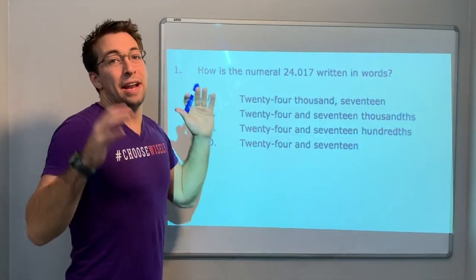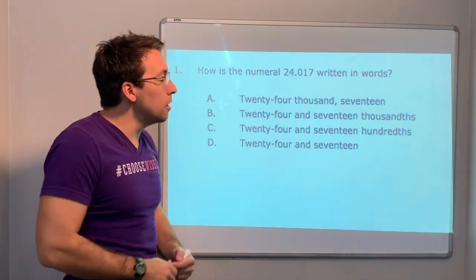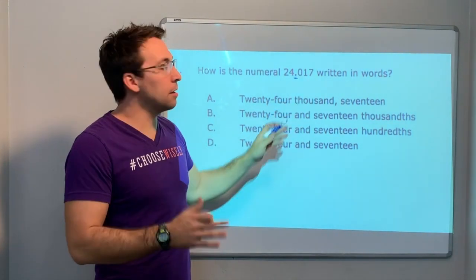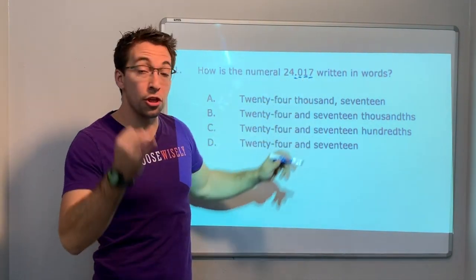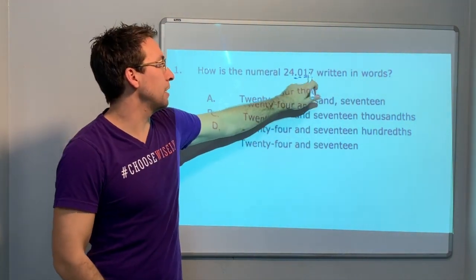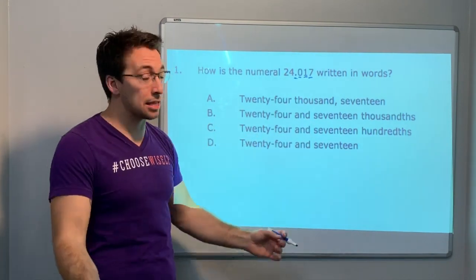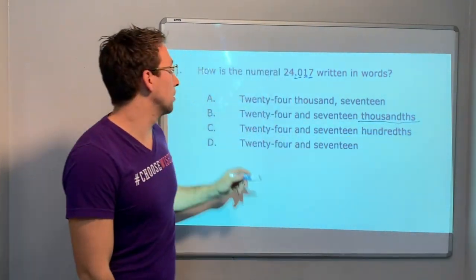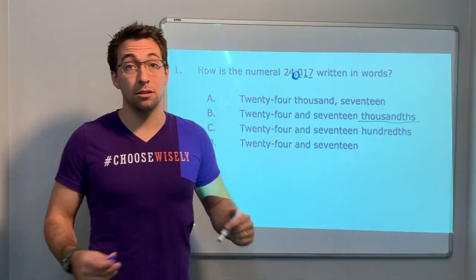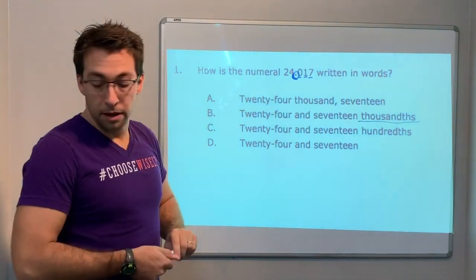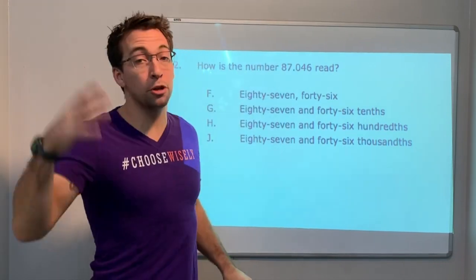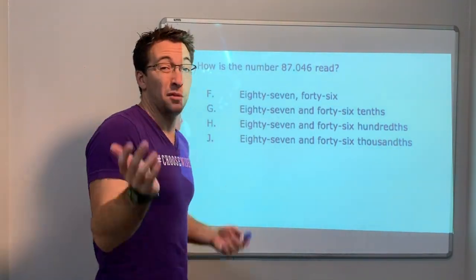Question number one: How is the numeral 24.017 read? We just have to read the number 17, and then it ends in one, two, the third - I can count the third decimal value - so that's going to end in the thousandths place. 24 and 17 thousandths. Our answer is B. Now with this video series, you have the ability to push pause before I give the answer.